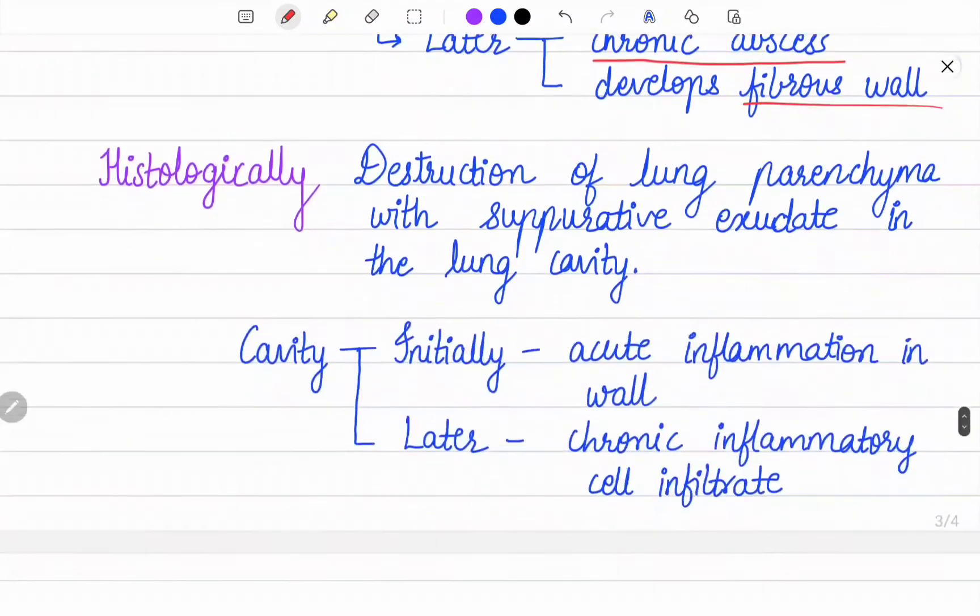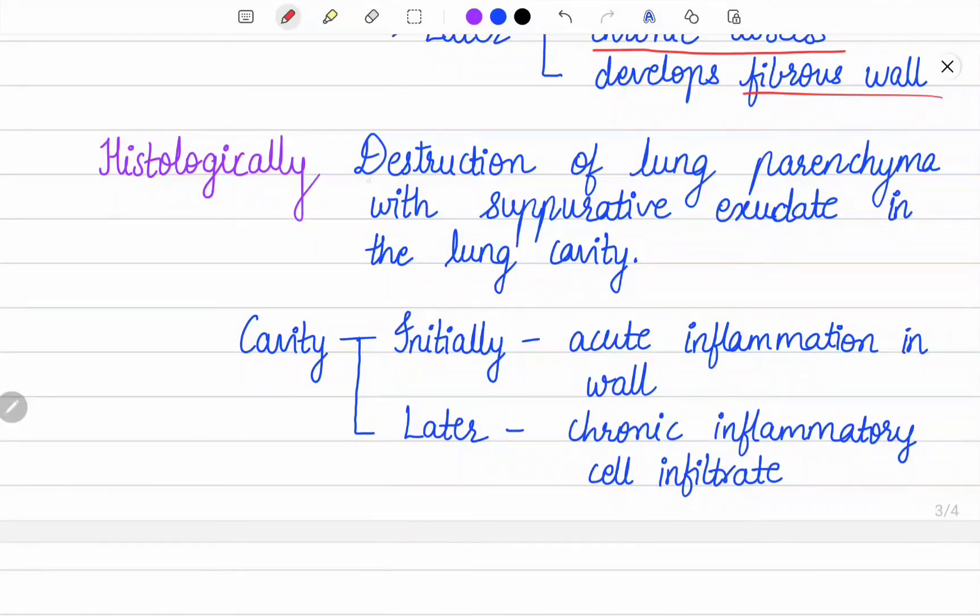Histologically, the characteristic feature is destruction of lung parenchyma with suppurative exudate in the lung cavity. The cavity is initially surrounded by acute inflammation in the wall, but later this is replaced by chronic inflammatory cell infiltrate composed of lymphocytes, plasma cells, and macrophages.